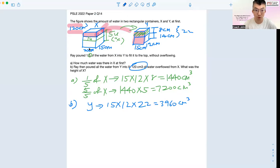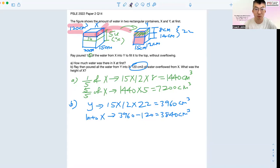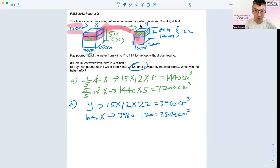Bear in mind that you overflowed. So what goes into X is actually 3960. Overflow means out, you have to minus. So it's 3840 cubic cm, which is the bandong that is floating inside.